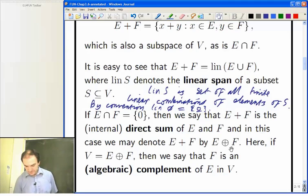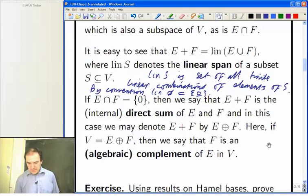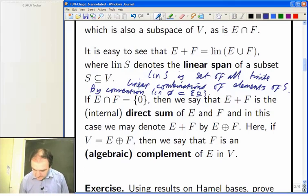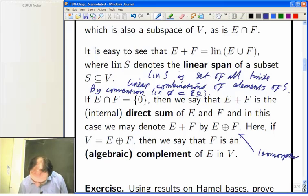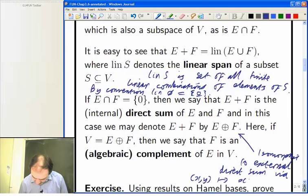So this when E intersection F is just zero, then we can use this circle plus direct sum notation for the sum E plus F. And we'll note here that the two different kinds of direct sum are isomorphic to each other. So it's isomorphic to the external direct sum